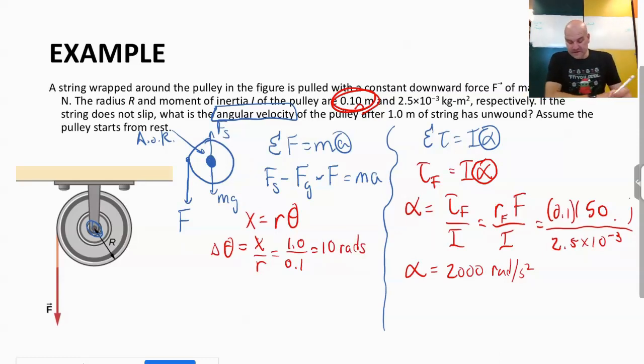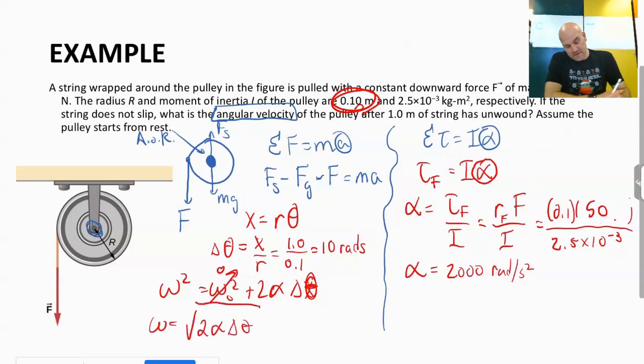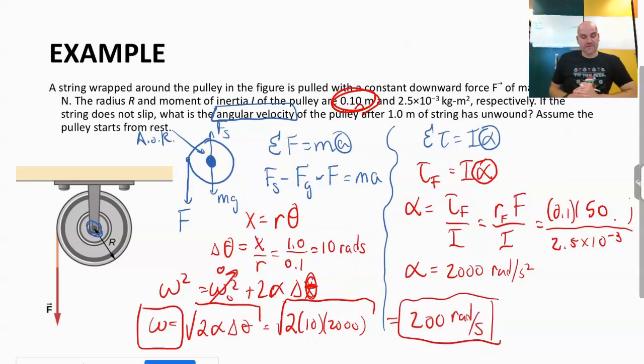And now I can use this and find my final, oh it should be a theta. My final angular velocity. So it starts from rest, so that goes away. And then omega will be the square root of 2 alpha delta theta. So it's going to be the square root of 2 times 10, sorry that's my delta theta, times 2,000. So 2 times 10 times 2,000. And then I'm going to take the square root of that. And that's going to give me 200 radians per second.